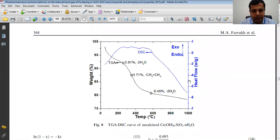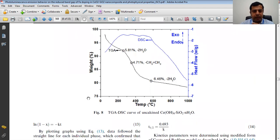This is the first graph, the basic data for the TGA-DSC curve of our uncalcined sample which is cerium OH4, silicon oxide, and water molecule. We have taken this as the base material to characterize this material as well as to calculate the thermodynamics and kinetic parameters. This is the TGA curve and this is the DSC curve. I will talk about the TGA curve. There is weight loss with the change in temperature.